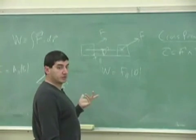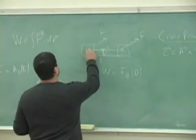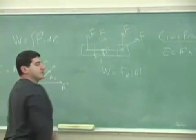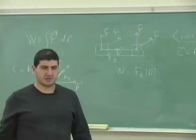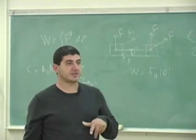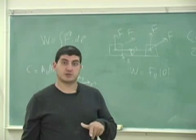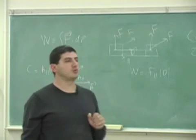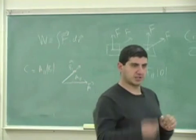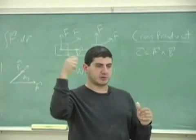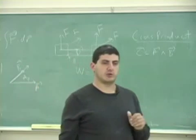Another good reason why work is a dot product: when the force is at 90 degrees, F times D times cosine of 90 is zero, so you do no work on the object. Just like in circular motion — when you turn something in circular motion, your force is perpendicular to the motion, so you apply no work.